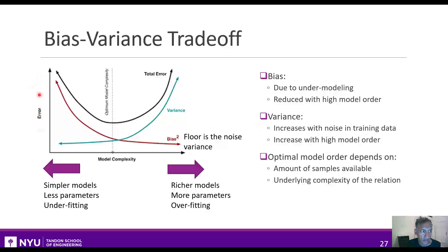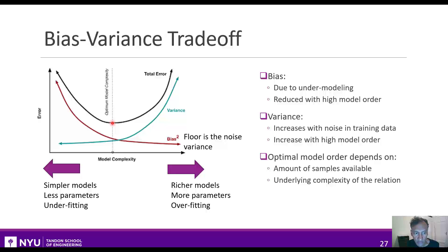We can illustrate this with a graph where the x-axis is model complexity — like model order — and the y-axis is function MSE or generalization error. Picking very high model orders drives bias squared down, but drives variance up. The total error is the sum of these two, so there's some optimal model complexity in between. This optimal value is what we need to identify when selecting the best model order.